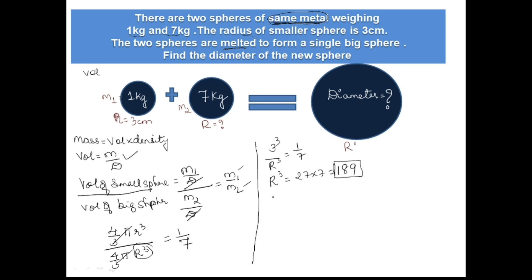We will find out whether it is required in the format of R³ only. Next, melted and recast, so volume of small sphere plus volume of big sphere is equal to volume of the biggest one, the new sphere.